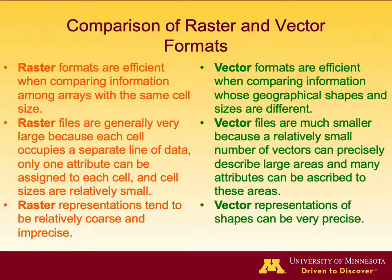Raster files are generally large because each cell occupies a separate line of data in the attribute table. Vector files are much smaller because a small number of vectors can precisely describe large areas. Additionally, raster files tend to be relatively coarse and imprecise, while vector files can be very precise — one vector type can represent a large area in the map with high precision.